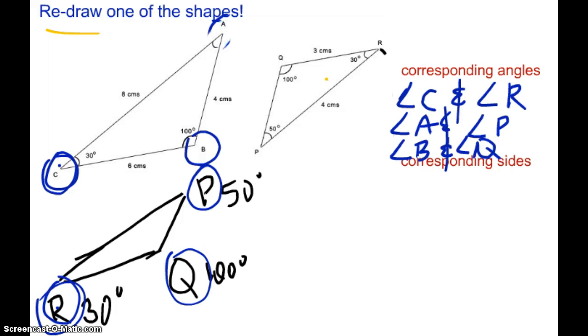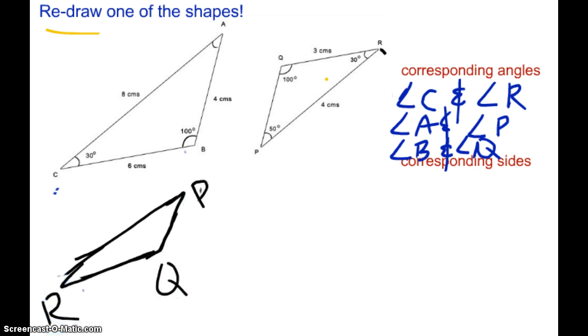Now let's talk about corresponding sides. Let me do some erasing. All right. So let's now talk about the corresponding sides. So let's take side AC, or CA. What does AC correspond to? AC corresponds to PR. See how it's much easier to determine your corresponding sides and angles when you have them facing the same way.